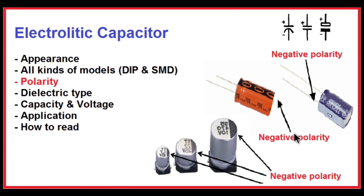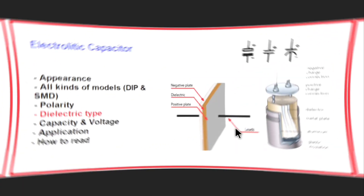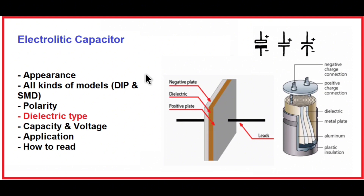Polarity means the positive and negative sides of the capacitor. In schematics, non-polarized capacitors are shown as two parallel lines, while polarized capacitors have a distinct positive and negative terminal. An electrolytic capacitor is a polarized capacitor. On DIP models, the negative polarity pin is always marked with a stripe — either white or black. On SMD electrolytic capacitors, a black strip engraved on the body indicates the negative polarity. The dielectric of electrolytic capacitors is made of electrolyte.